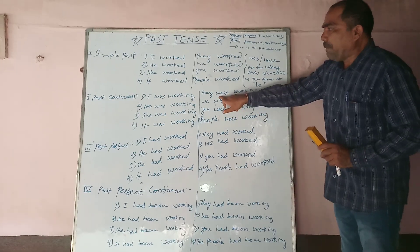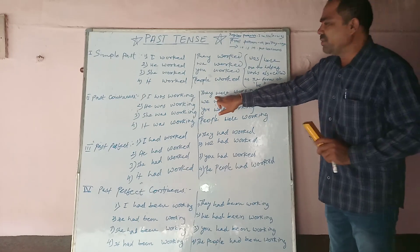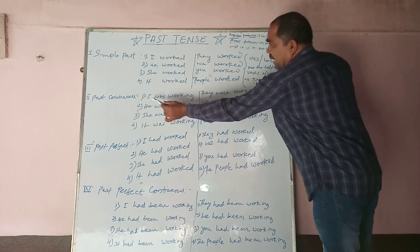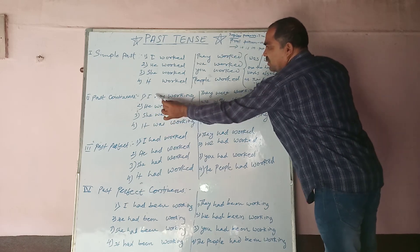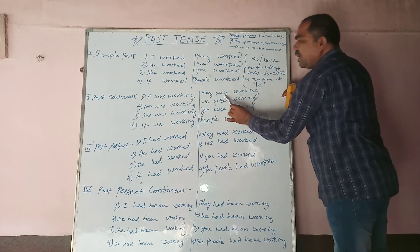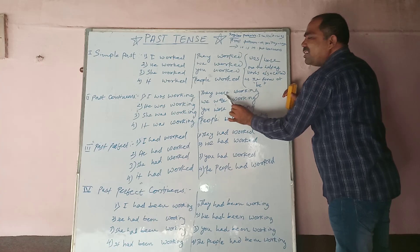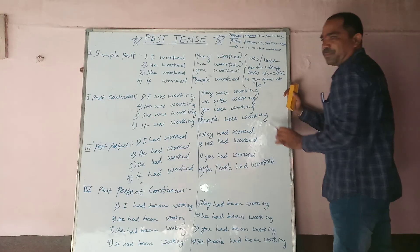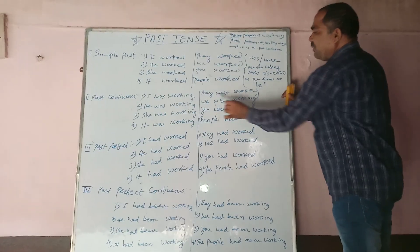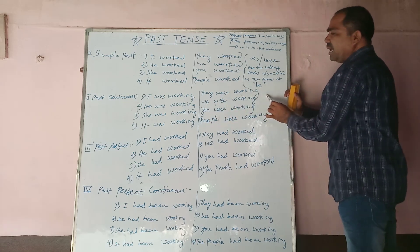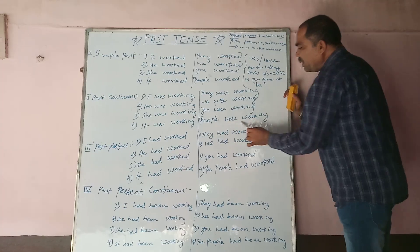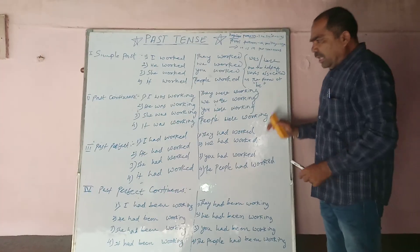In past continuous, after using plural pronouns the changes are: when we were using the singular pronoun we took 'was', but here we have to take 'were', because 'were' expresses the meaning of plural and 'was' expresses the meaning of singular. Therefore: they were working, we were working, you were working, the people were working.